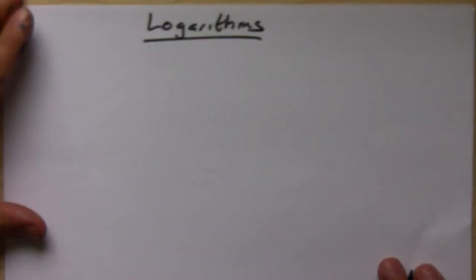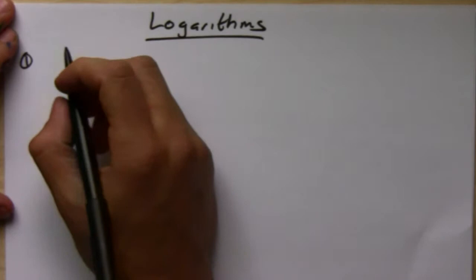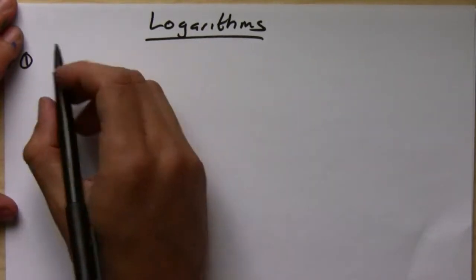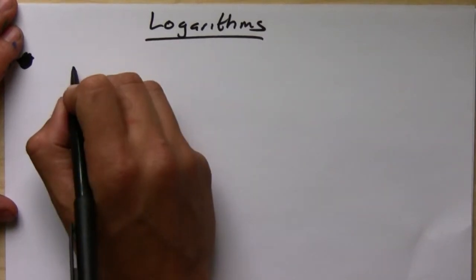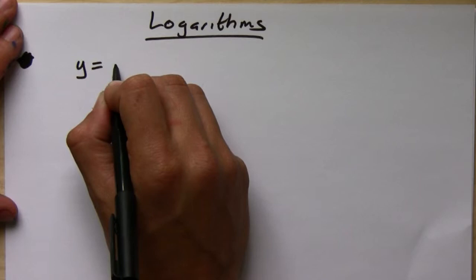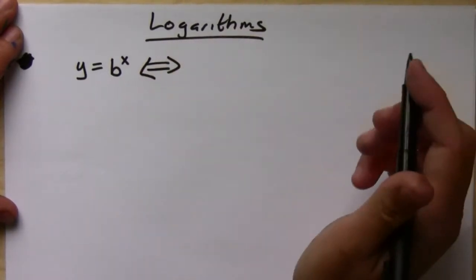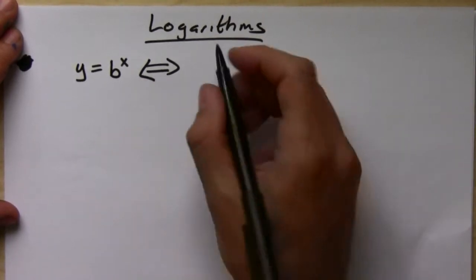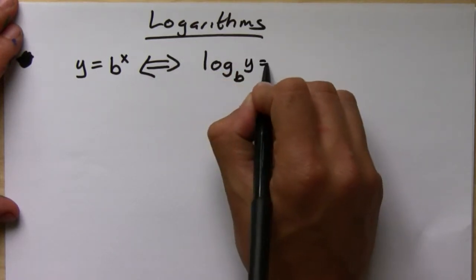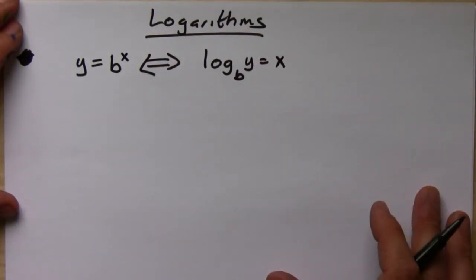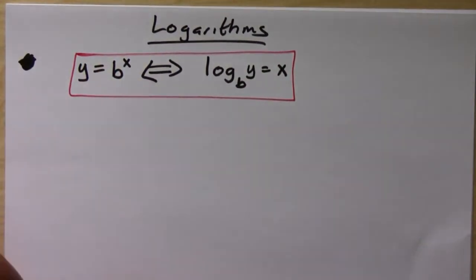Let's talk about the algebra of logarithms. We have several properties and several laws. First, the definition of the logarithm is really important: the logarithm is the inverse of the exponential function. The log of the output is going to be the input of the exponential, just like what we talked about earlier with inverse functions.